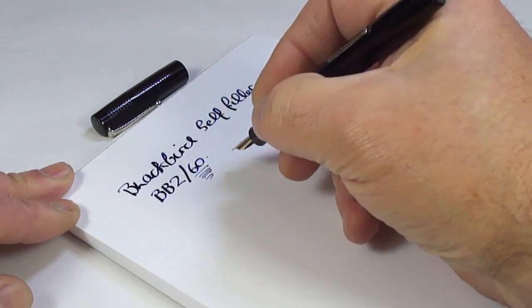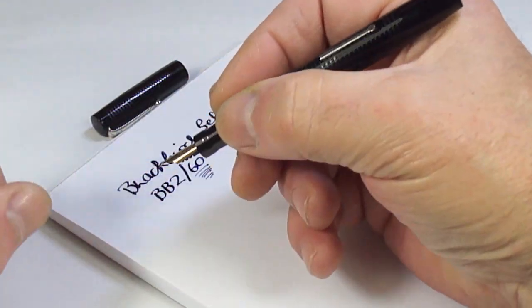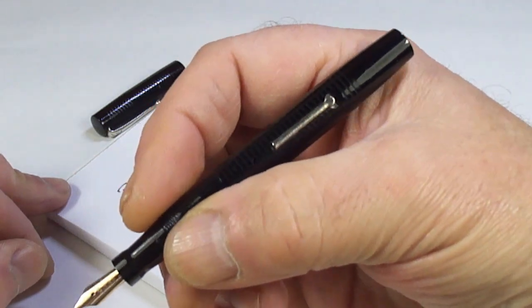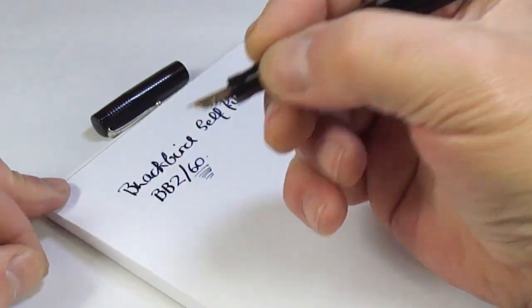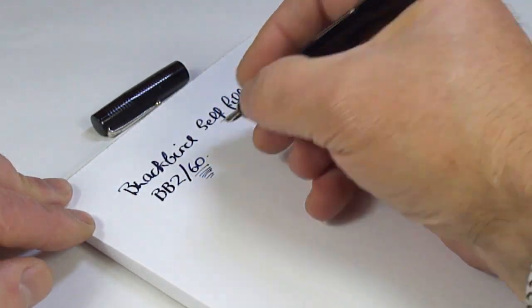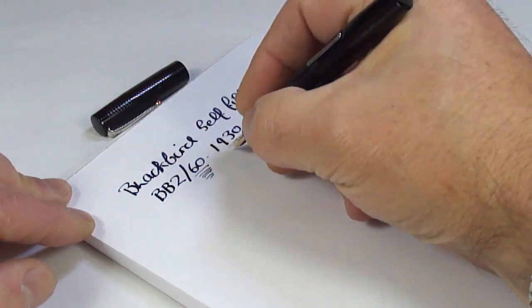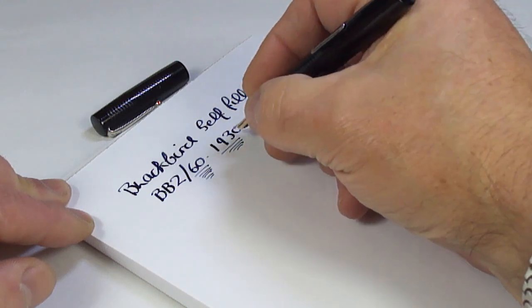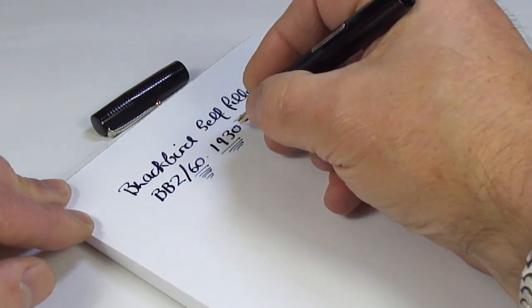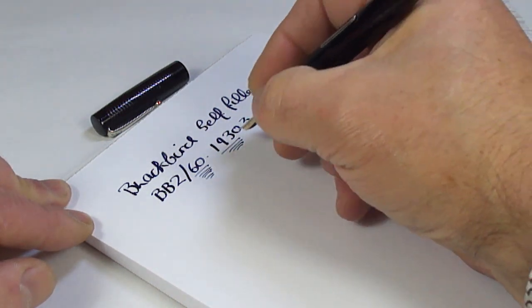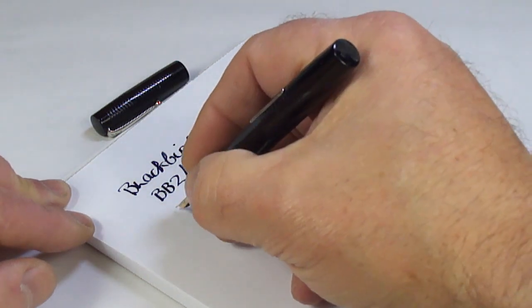And as we said, this one is the BB2-60. Incidentally, I know the 60 there relates to it being black hard rubber. Yeah, that's the thing I'm not mentioning. It's a black hard rubber pen, this one. And the date of it is from the 1930s. Maybe around about 1933, but the 1930s.